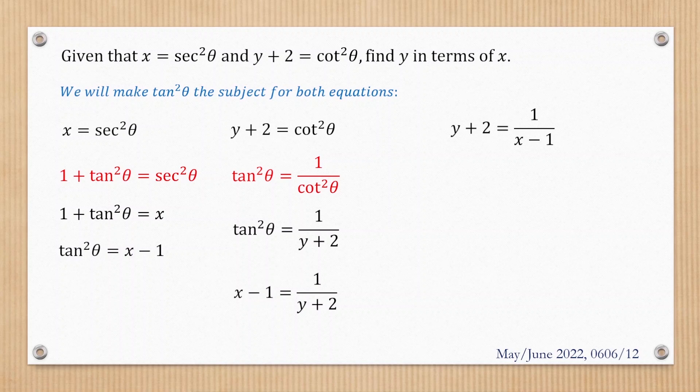By cross multiplication, we get y plus 2 equals 1 over x minus 1. Then we subtract 2 from both sides.